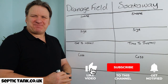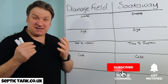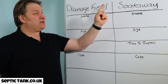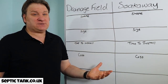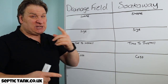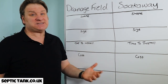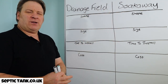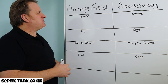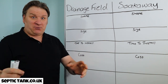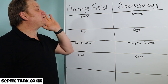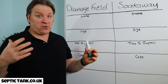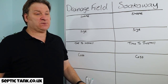Jason here from septictank.co.uk. In this video I'm going to explain the difference between a drainage field and a soak away, because many people are confused — these words are used interchangeably on the internet. The rules and regulations changed on the 1st of January 2020, so the correct terminology now is: a septic tank is connected to a drainage field, and a soak away is connected to rainwater — your gutters — a rainwater soak away.